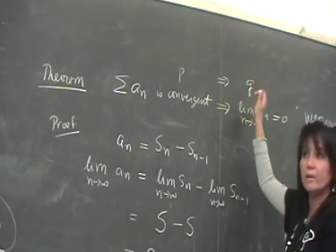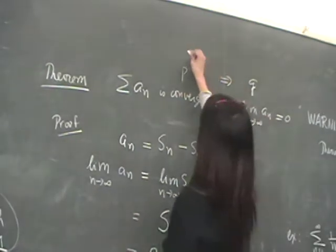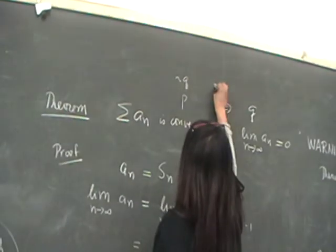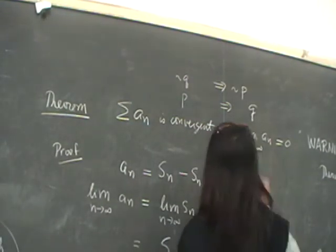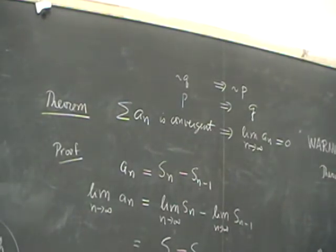So this is P implies Q, right? This is true, correct? So we can take the, what do you call that? It's the contrapositive, right? The contrapositive is true, correct?